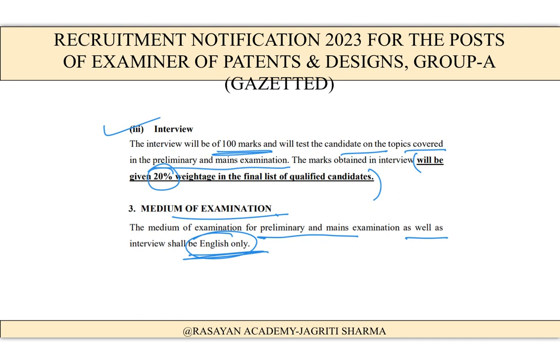I hope I have included all the important points about what the post is about and the important criteria. If you have any further questions, you can ask in the comment section. Please share this video with your friends so they get to know about these kinds of posts. If you want to join Rasayan Academy Plus for CSIR NET preparation, you can do so using my code 'Jagriti S'. Have a nice day, everyone!